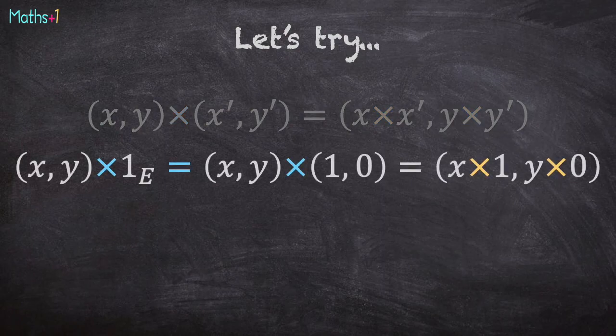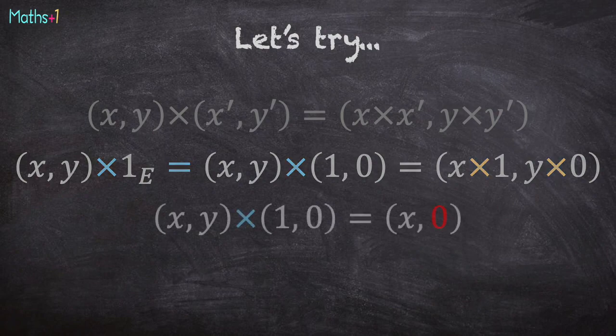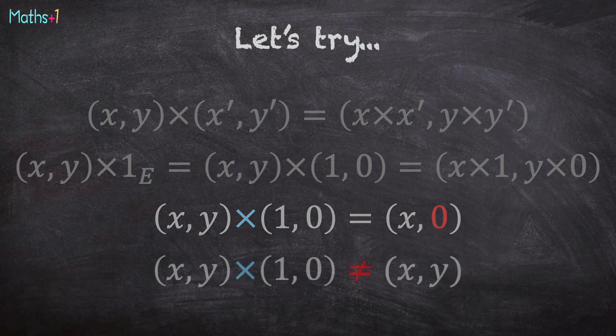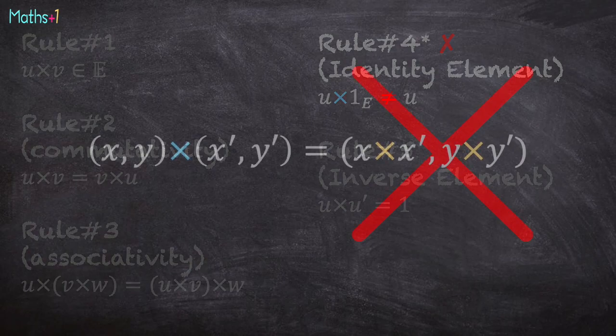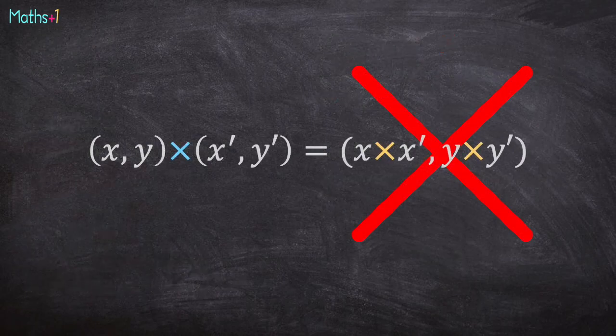(x, y) times 1 is (x, y) times (1, 0), which is (x times 1, y times 0). The result is (x, 0). Well, it's not good. It should be (x, y). Well, rule number 4, the identity element rule is broken. Our definition of the multiplication is not a good one.